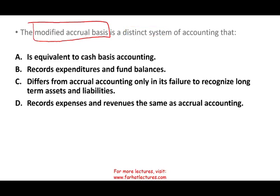The question itself says it's a distinct system. Option A asks: is it equivalent to cash basis? Well, if it were equivalent to cash basis, we would just call it cash basis — so A is out. It's not cash basis. Option B says it records expenditures and fund balances. In modified accrual, we do use the word 'expenditure' — not 'expenses.'